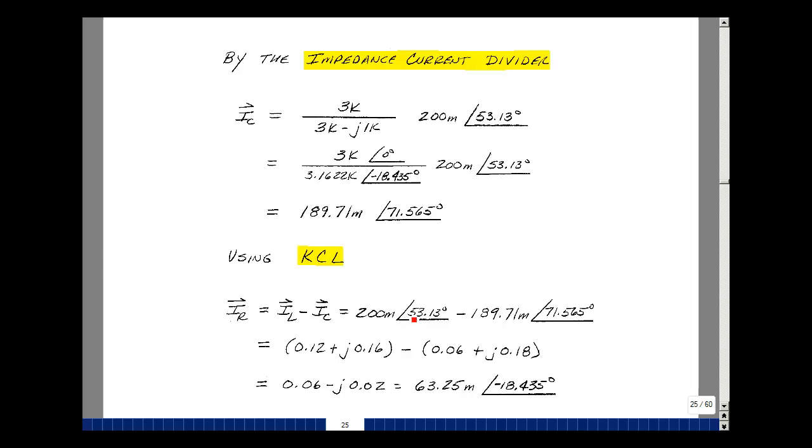Again, using my calculator to do this. And I get 0.12 and plus j 0.16, 0.06 plus j 0.18. Okay, now we're going to add this together. Add the real parts, add the imaginary parts. So the sum of these two,